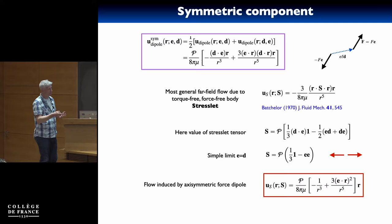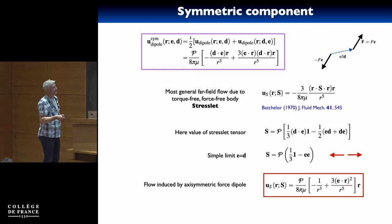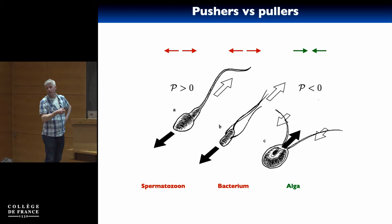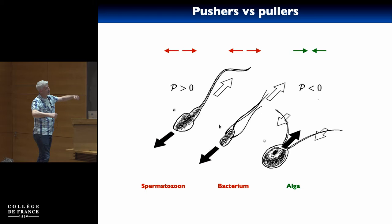What do those dipoles look like? Looking back at the formula, there are two things: E, the unit vector along the cell axis, and P, a number with a magnitude and a sign — positive or negative. The two organisms on the left are characterized by positive P and are called pushers. These cells create flow that locally along the cell axis is pushed away, and by mass conservation there is flow at right angles coming in the other direction. This organism is the opposite — a puller — which on average creates contraction along the cell axis and therefore repels flow at right angles.